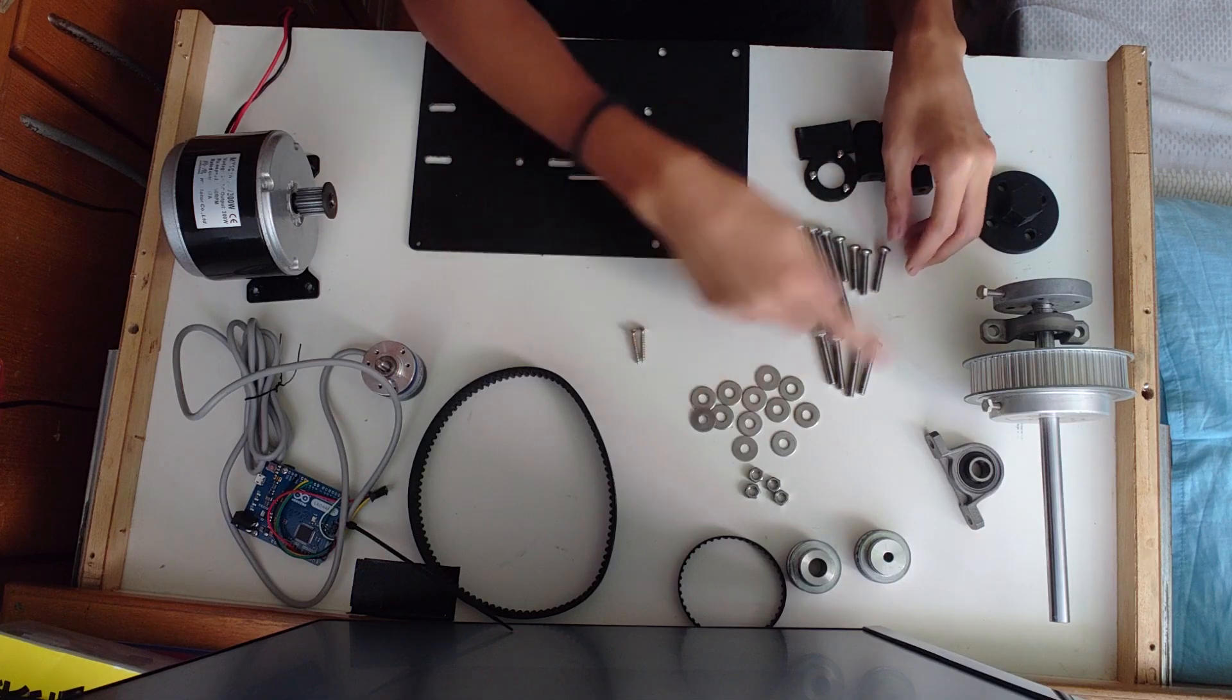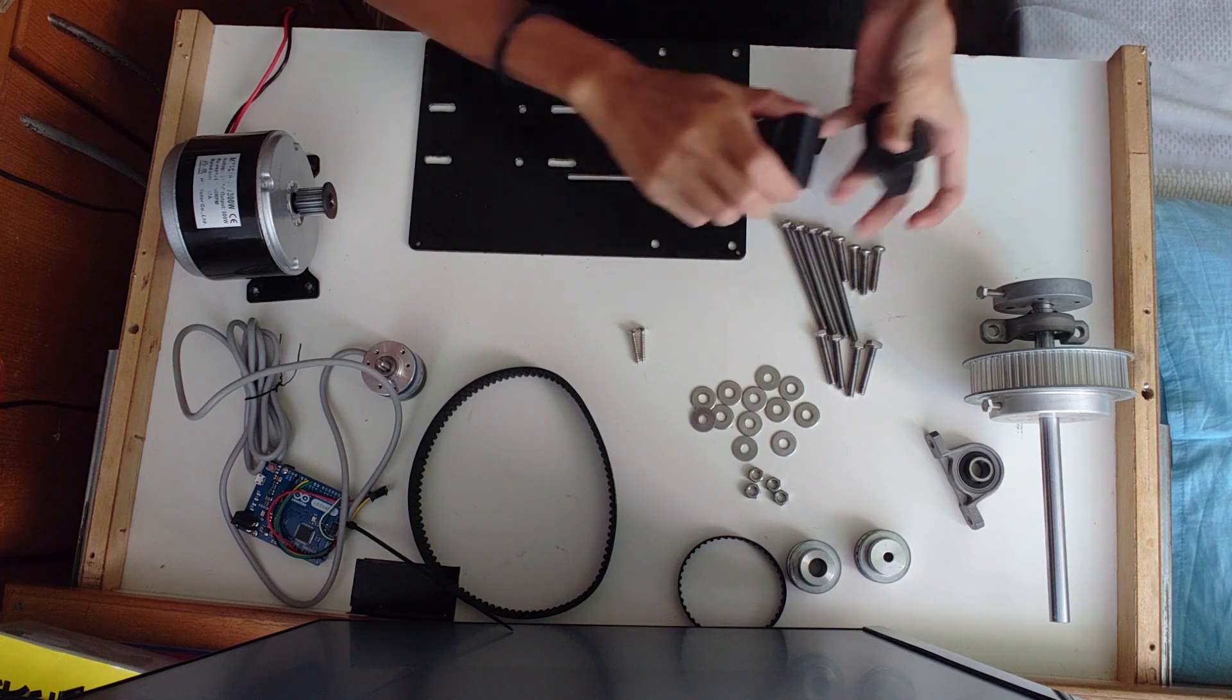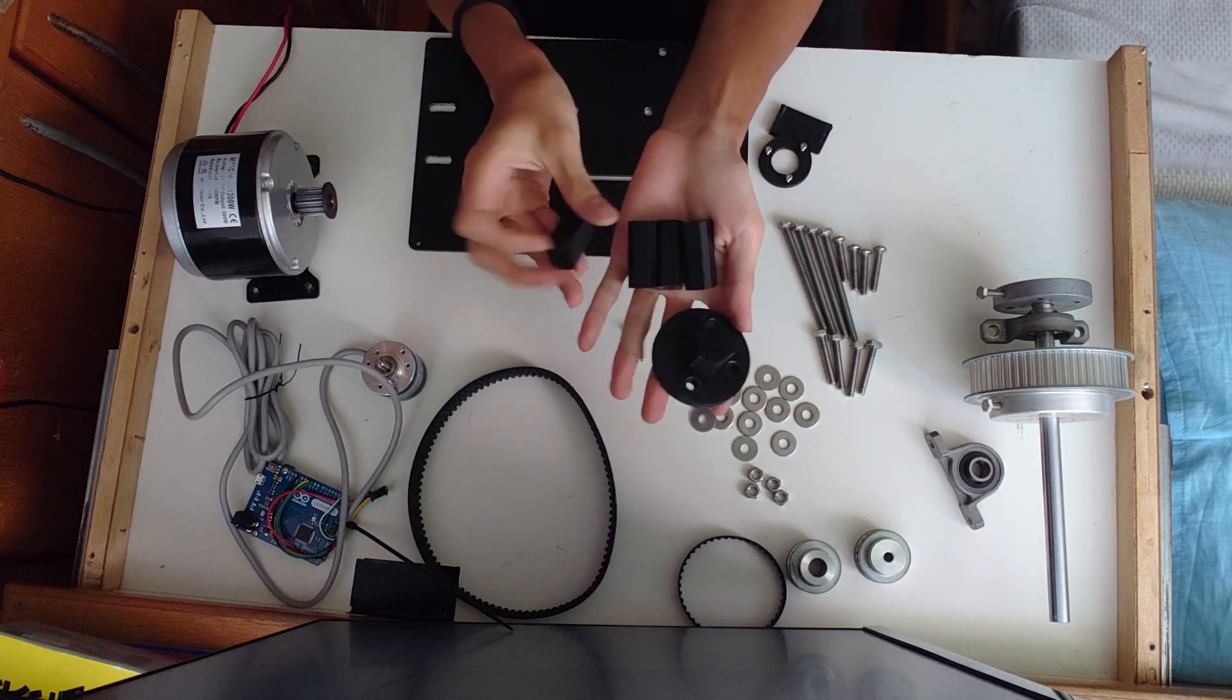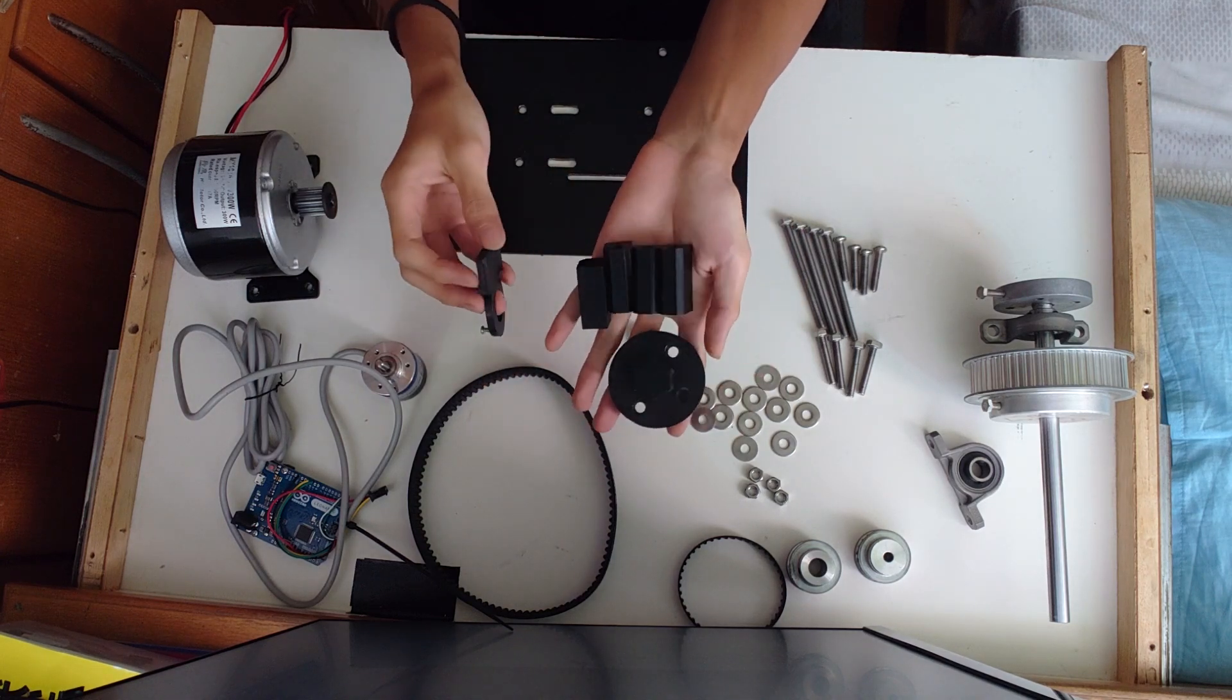Then there are some M4 screws, M6 screws, washers and nuts. Then there are some 3D printed parts for the encoder, for the pillow block bearing unit, and for the steering wheel quick release.